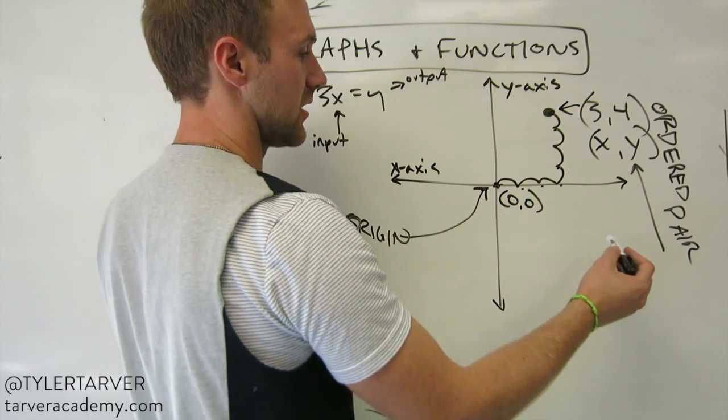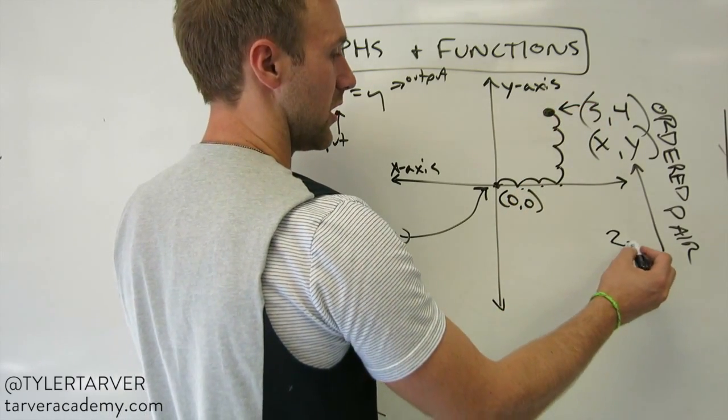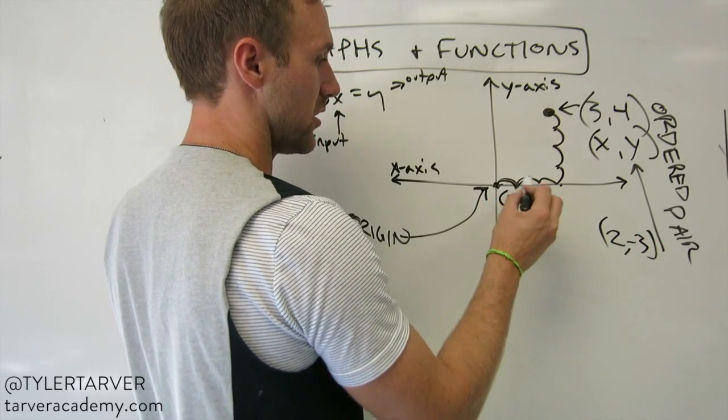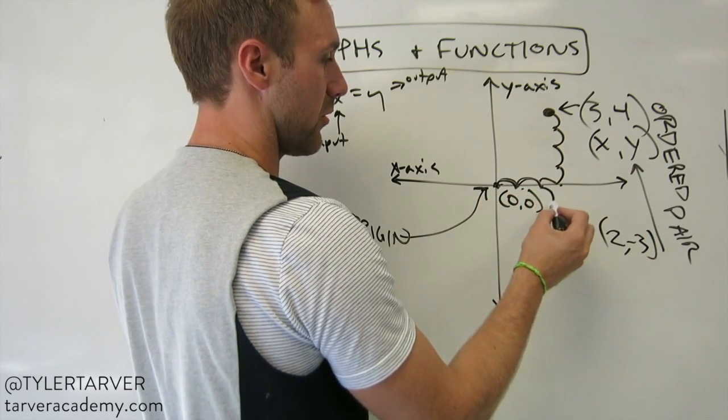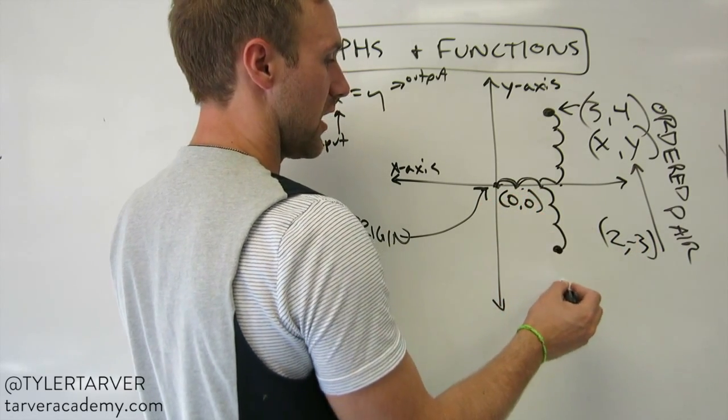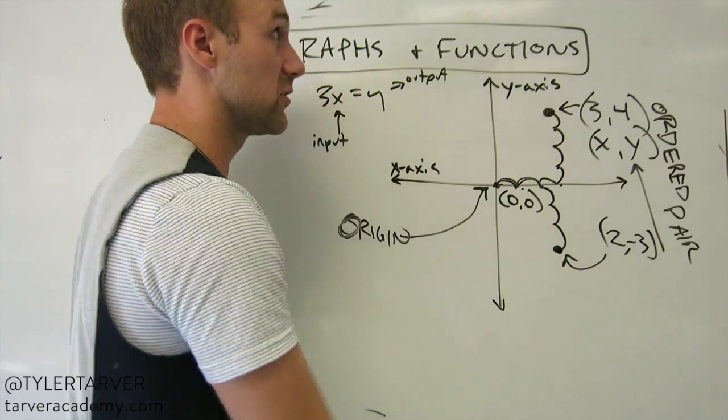For instance, say you've got 2, negative 3. I'd go over 2. 1, 2. And then I'd go down 3. 1, 2, 3. And that's where this one is. So that's an ordered pair.